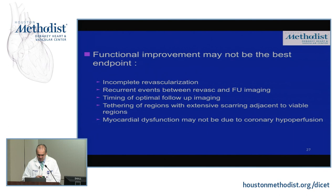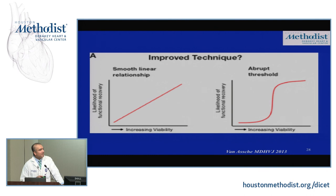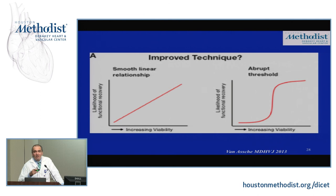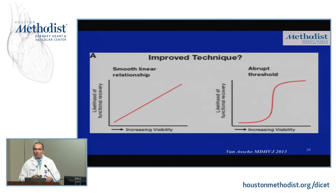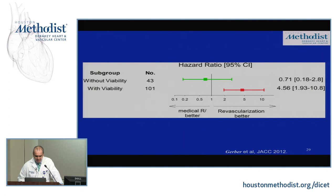The last important concept: when we talk about sensitivity and specificity, we treat viability as a dichotomous phenomenon. But the relationship between viability and likelihood of improvement may actually be much more linear — if you have 60% viability you probably do better than 50%, which does better than 40%, than 30%. Any analysis that simply dichotomizes 'improve versus not improve' or 'viable versus non-viable' may be missing important nuance in this relationship.